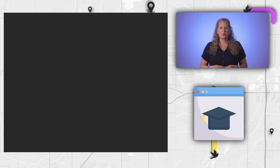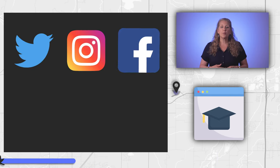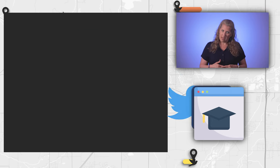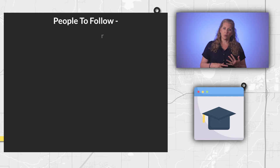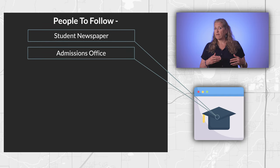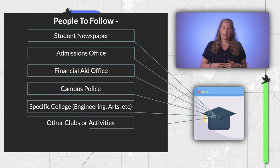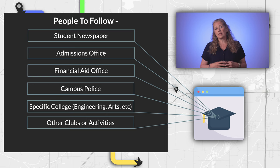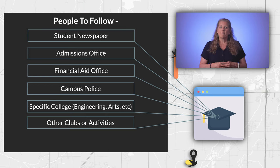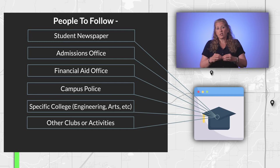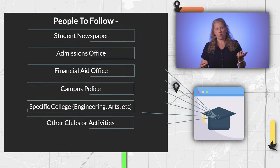Step 8: One easy way for you to measure the priorities and activities of the campus is to find the social media accounts used to communicate with the community and follow those accounts. Follow the general campus announcements accounts. You can consider following the student newspaper, admissions office, financial aid office, campus police, the academic college your intended major is in, and the account of any activity you may be interested in joining should you attend the college. Find those accounts during your website search. This is a great way to track what is happening on campus so you can determine if their priorities match your priorities.